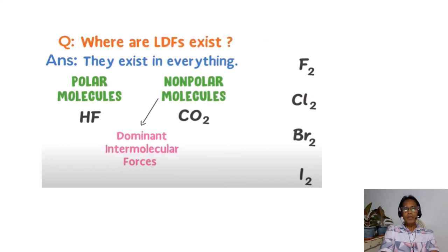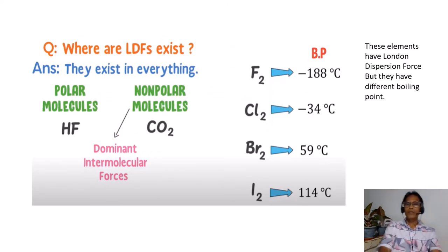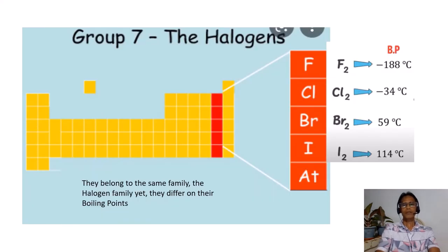In non-polar molecules like fluorine gas, chlorine gas, liquid bromine, and solid iodine — all of these elements have London dispersion forces, but they have different boiling points even though they all belong to the same family, the halogen family.